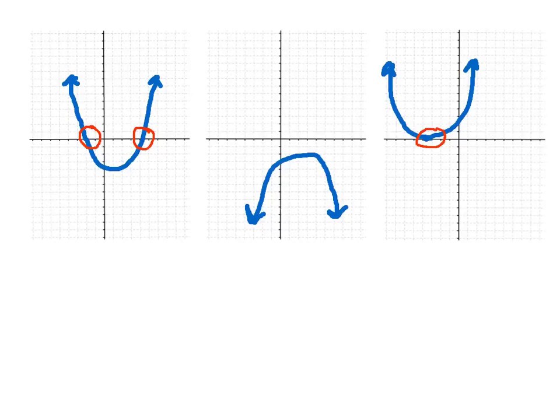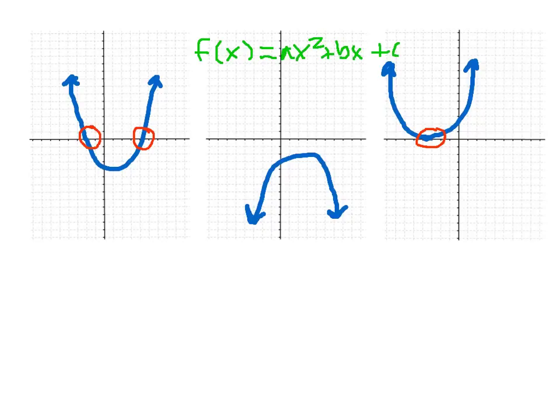In this video, I'm going to describe the relationship between the discriminant of the quadratic formula and the number of x-intercepts that a quadratic function will have. So if you're given a regular quadratic function, let's say f of x equals ax squared plus bx plus c — that is the standard form, or the general form, of a quadratic function.